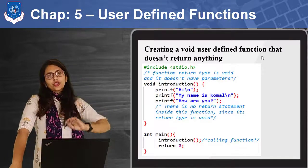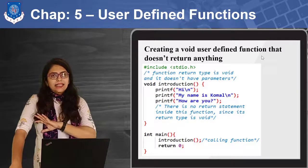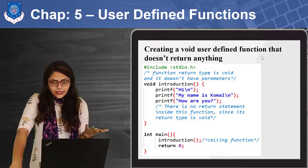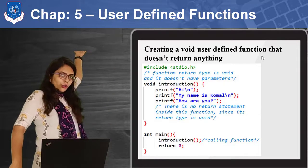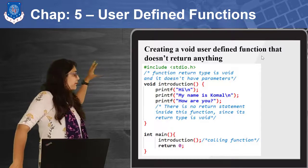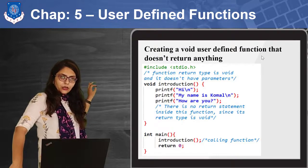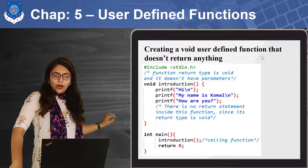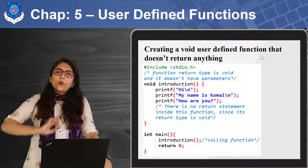Inside void main, I am just calling the function by writing 'introduction'. I don't need to pass any arguments because it is not going to manipulate data — it is just used to print. Whenever introduction is called inside main, control goes to the definition, it prints those three lines, and when the function encounters the closing curly brace, it returns to main and executes return 0.